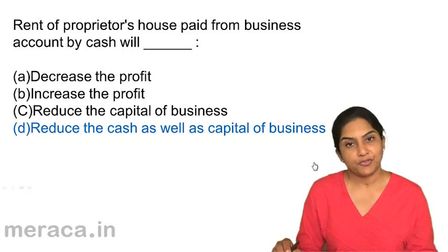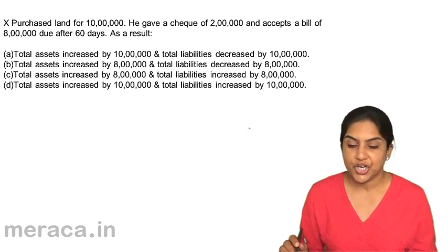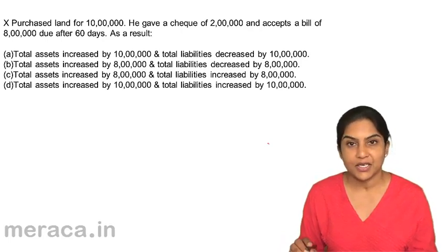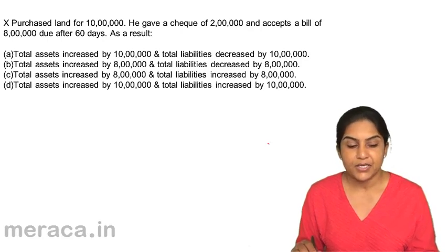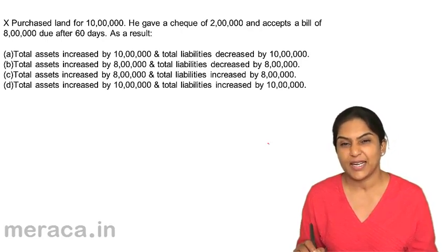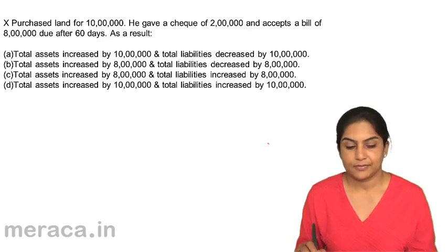Next question: X purchases land for 10 lakhs. He gave a cheque for 2 lakhs and accepts a bill of 8 lakhs due after 60 days. As a result — A: total assets increased by 10 lakhs, total liabilities decreased by 10 lakhs; B: total assets increased by 8 lakhs and total liabilities decreased by 8 lakhs; C: total assets increased by 10 lakhs and total liabilities increased by 10 lakhs; D: total assets increased by 10 lakhs and total liabilities increased by 10 lakhs.